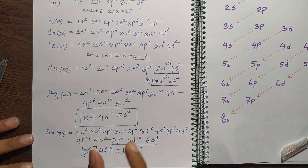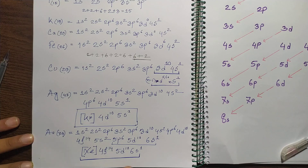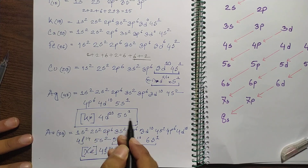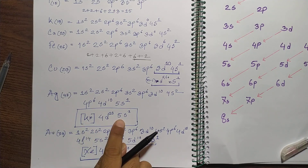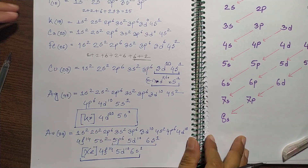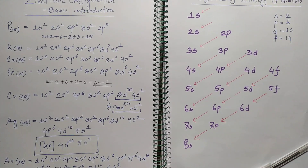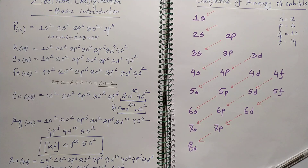Because gold is element 79 and comes after the inert gas xenon, we can write its electron configuration as [Xe] 4f14, 5d10, 6s1. In shorthand, silver is [Kr] 4d10, 5s1 and gold is [Xe] 4f14, 5d10, 6s1. This is a basic explanation of electron configurations — I hope you understand the sequences.